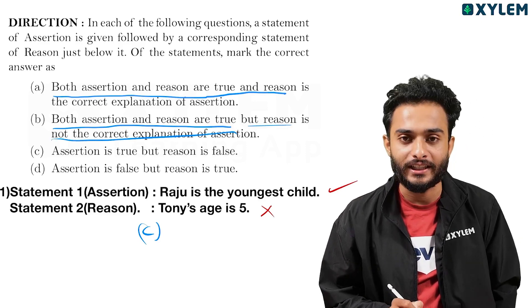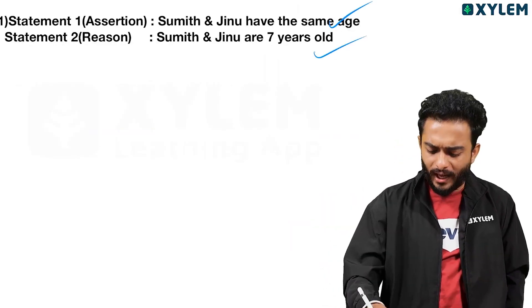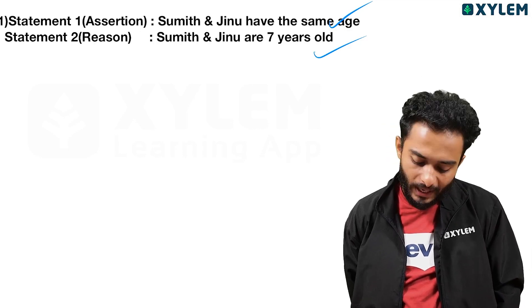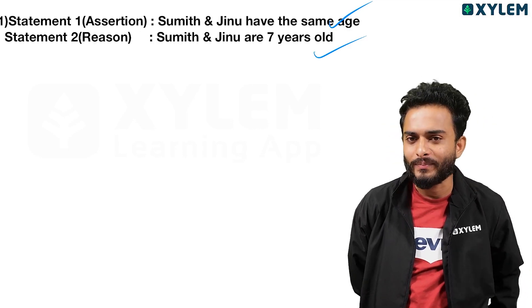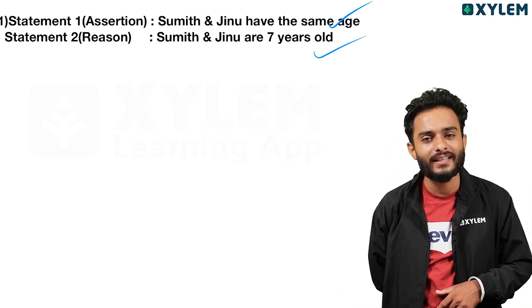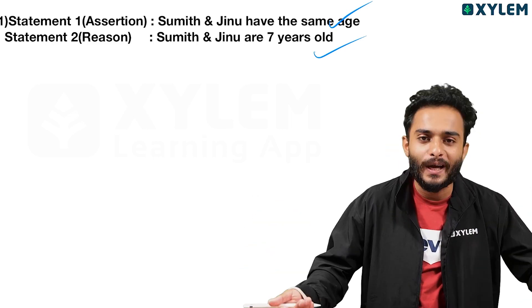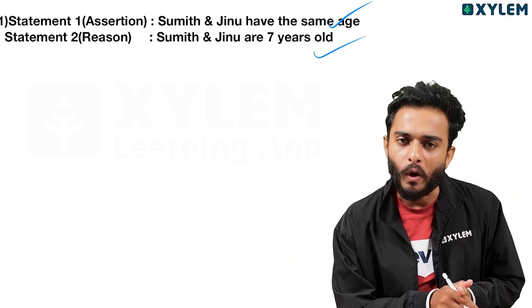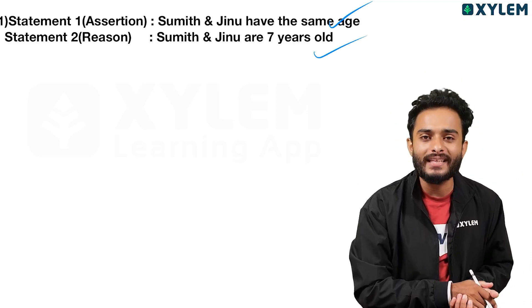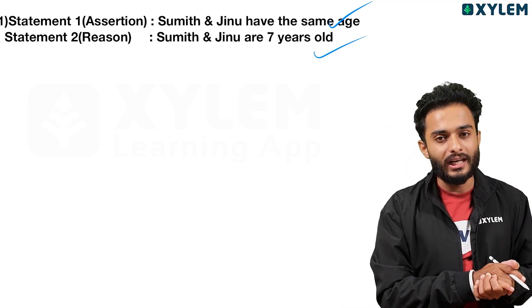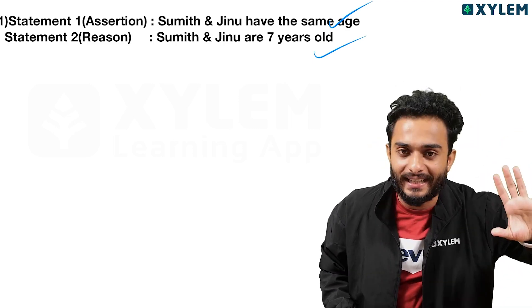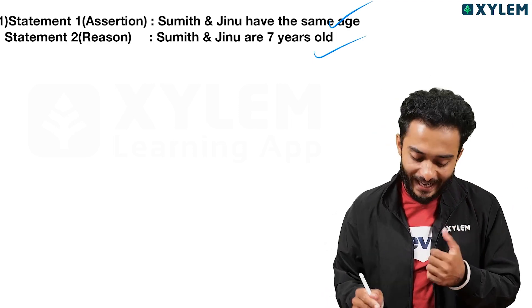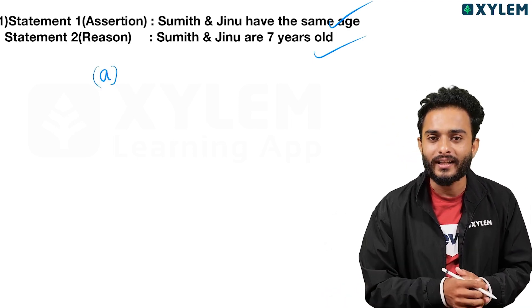The answer for Question 2 is Option B — both assertion and reason are true, and statement 2 is the correct explanation of statement 1, since both Sumit and Jinnu are 7 years old.